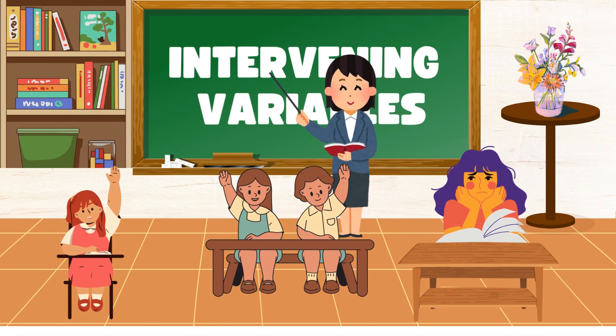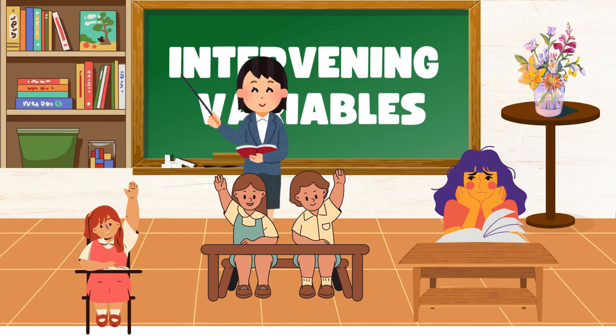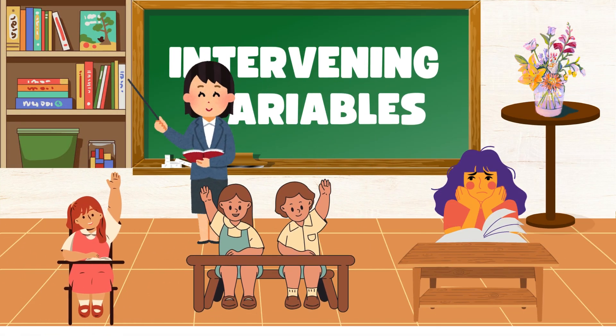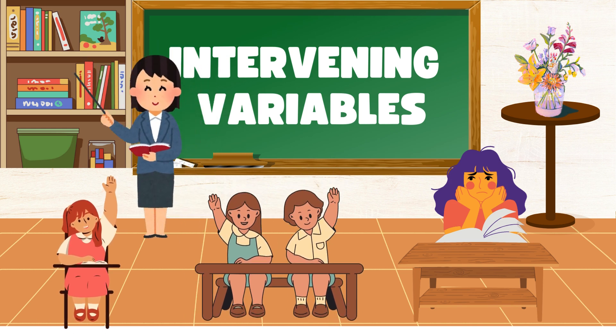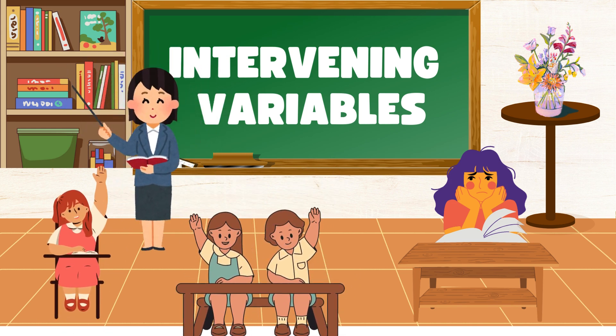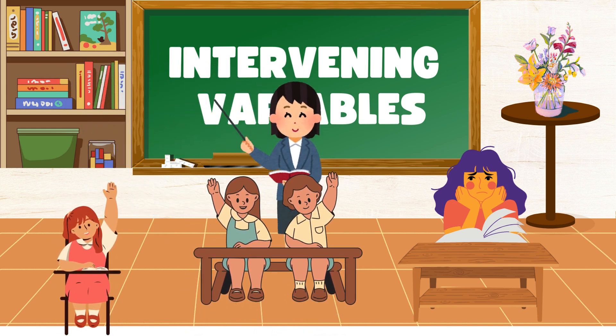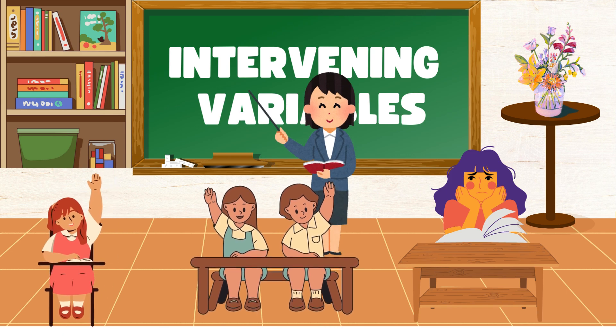Intervening variables are hidden mental processes, like motivation, expectation, or thinking, that influence behavior but can't be directly observed.